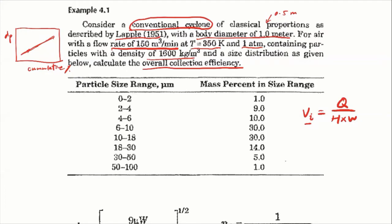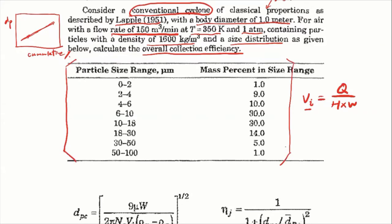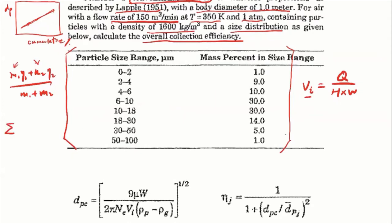The most important thing is the size distribution, which decides the overall collection efficiency. For the settling chamber, we said the collection efficiency is M1·η1 plus M2·η2 divided by M1 plus M2. It depends on the fraction of particles at each specific size. If we know the size distribution composed of multiple sizes, it becomes the summation of Mi·ηi divided by the summation of all Mi.